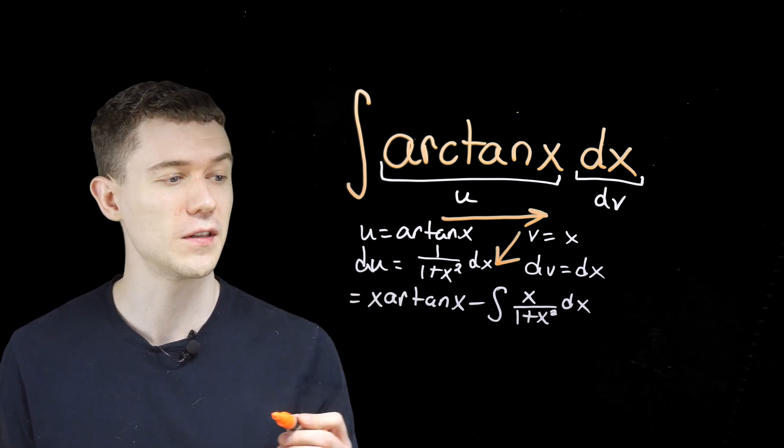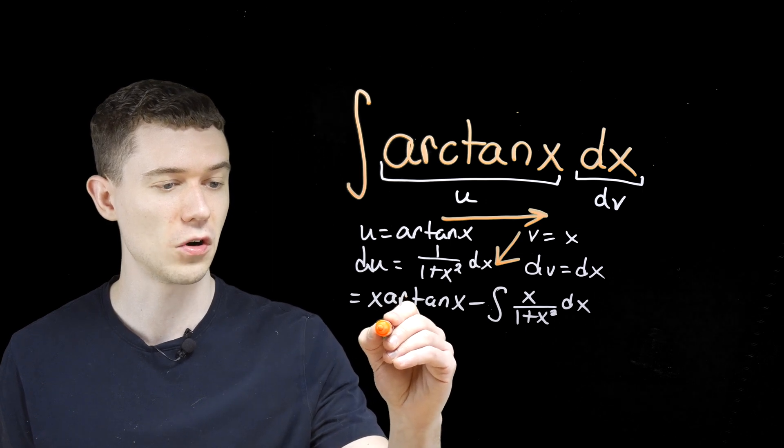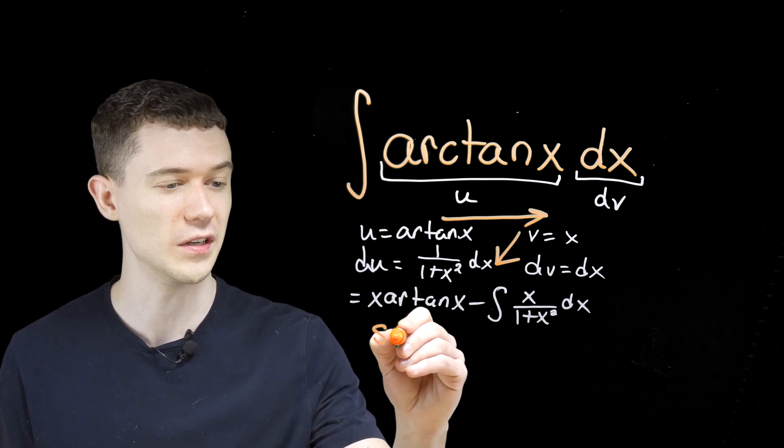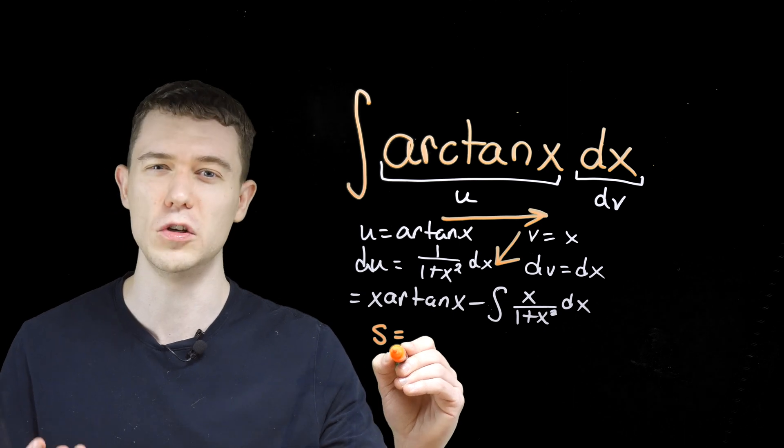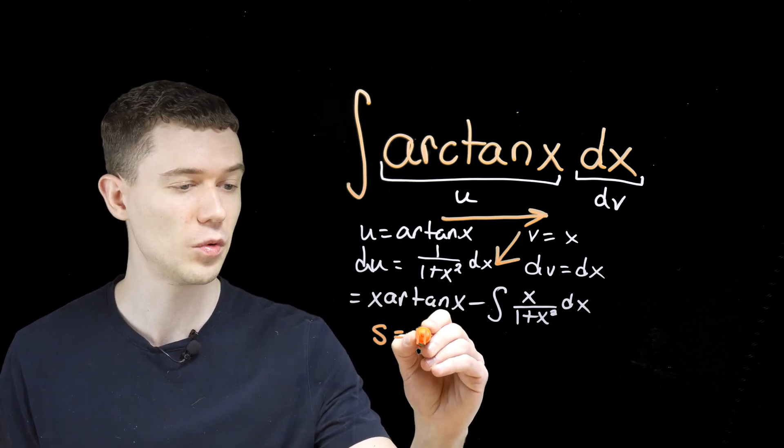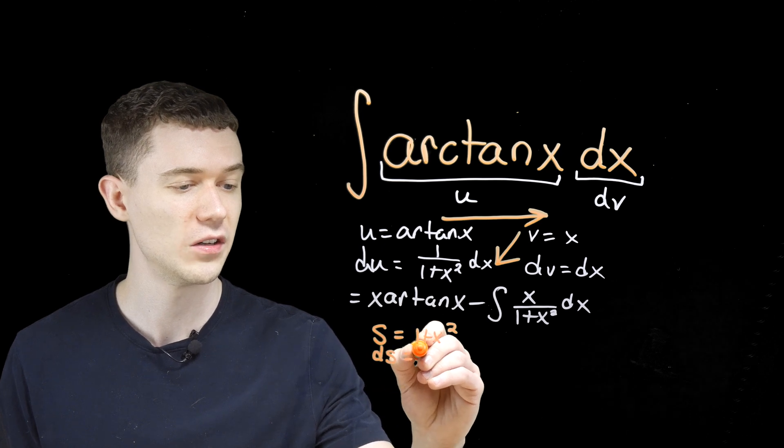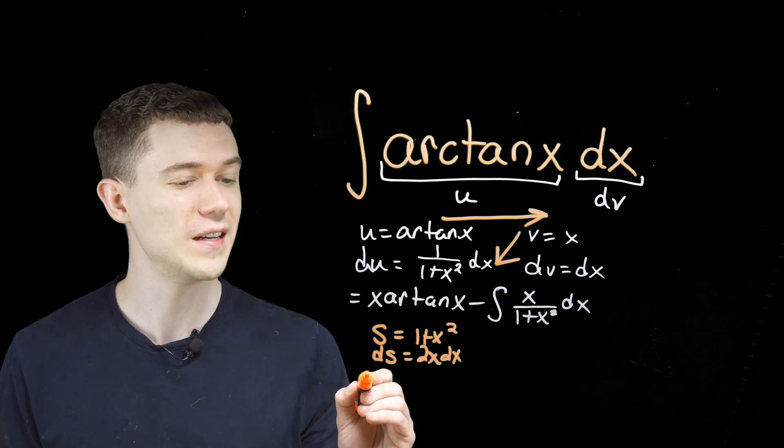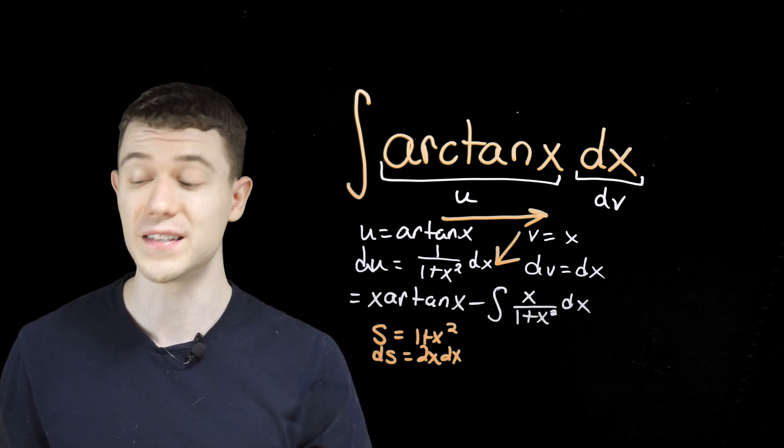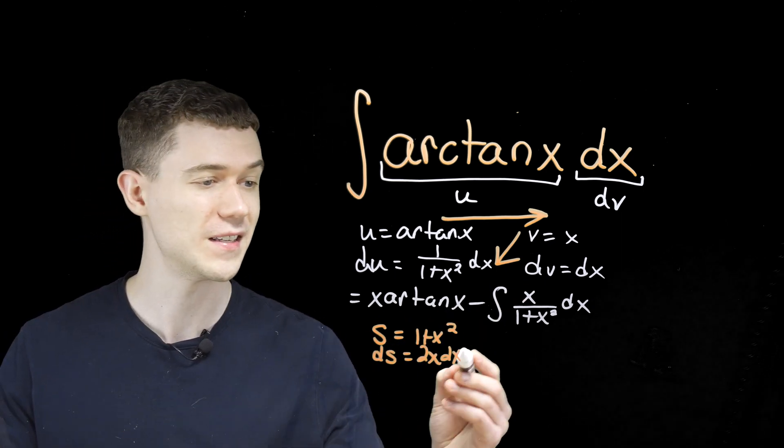And maybe I shouldn't use the letter u. I already used the letter u, so maybe I'll just call this an s substitution. Use whatever letter you like. You could say u1 if you want. s will be 1 plus x squared. That makes ds equal to 2x dx. And we're seeing that, well, this is just twice the numerator. We can make this substitution.